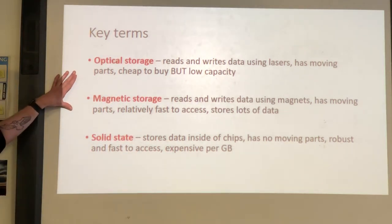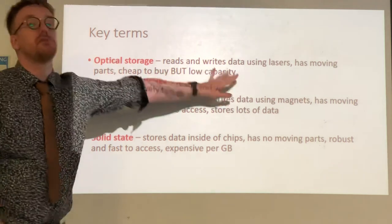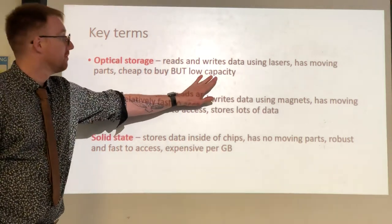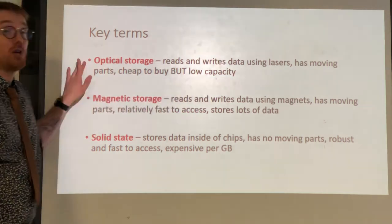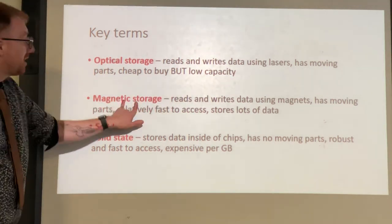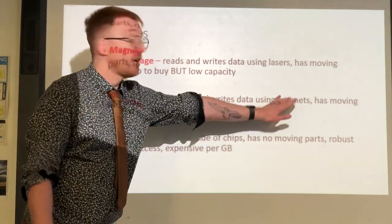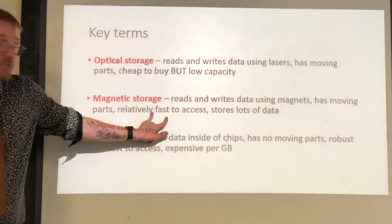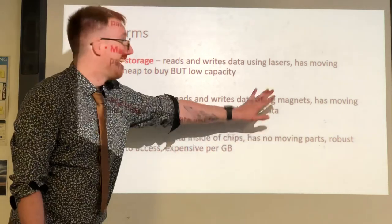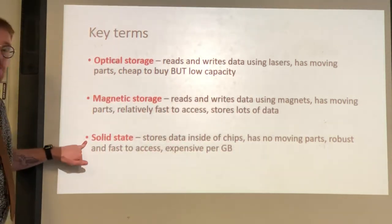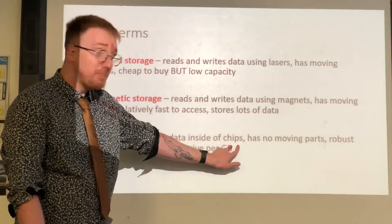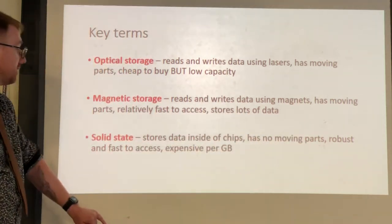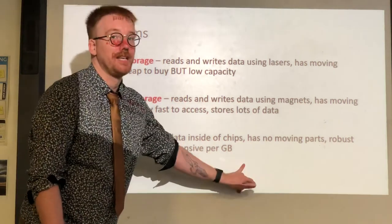Let's recap the key terms. Optical storage reads and writes data using lasers, has moving parts, and is cheap to buy but low capacity — in fact most computers and laptops no longer come with an optical drive. Magnetic storage reads and writes data magnetically using north and south poles to represent zeros and ones, has moving parts, is relatively fast to access, stores lots of data, and is typically cheap per gigabyte. Solid state stores data inside chips, has no moving parts, is therefore robust and suitable for portable devices, offers faster access, but is expensive per gigabyte.